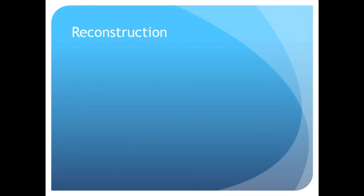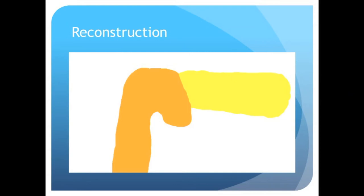At that point, the tumor is removed after division of the duodenum and ligament of Treitz. The reconstruction is then begun. The pancreaticojejunostomy, or a term for the anastomosing or suturing of the jejunum to the pancreas, is performed usually in a duct-to-mucosa fashion using two layers. This anastomosis is depicted here in the slide.